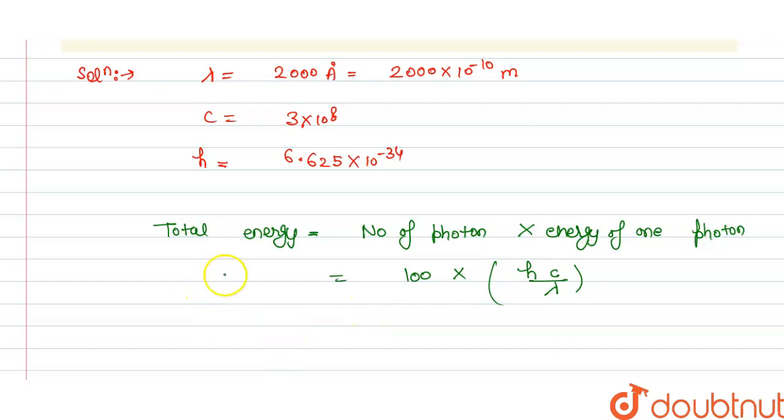So we have the total energy is equal to 100 multiplied by 6.625 into 10 power minus 34 and this is multiplied by 3 into 10 power 8 and this is divided by wavelength that is 2000 multiplied by 10 power minus 10.